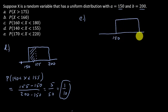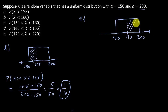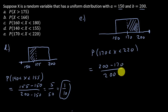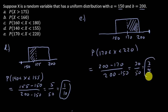Part E: the probability that X is between 170 and 220. With bounds 150 and 200, the value 220 falls outside the distribution, so the area from 200 to 220 is zero. We just find the area from 170 to 200: that's 200 minus 170 over 200 minus 150, which is 30 over 50, or three-fifths.